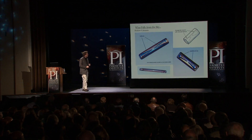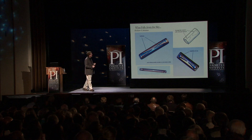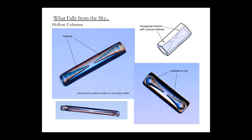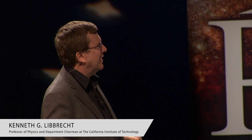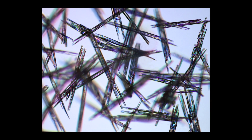Columns fall from the sky too. You usually see hollow columns — that's because the edges grow faster as water diffuses to them more, giving hollow regions inside. When they grow bigger the hollows kind of split and you get split ends — needle clusters. These can be two or three millimeters. When they fall on your sleeve they look like little bits of hair, so you don't notice them so much. But some days the whole snowfall is nothing but needles.